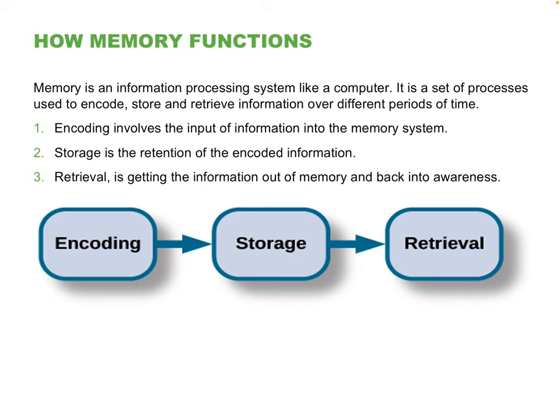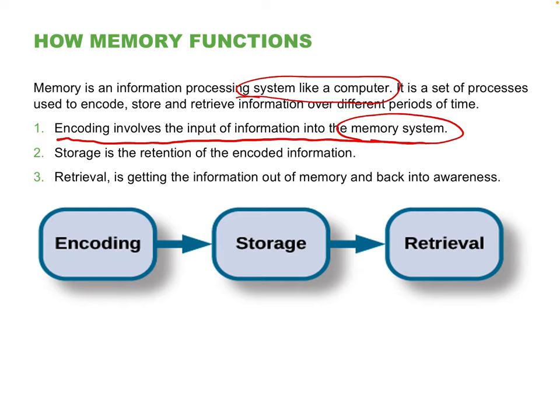In terms of how memory functions, let's talk about some basic terminologies borrowed from computer science. With the advent of the computer, its vocabulary seems like a good analogy to describe how information is moved around and stored within our brain. The first term is encoding — how we put information into memory. If you're using a computer, encoding would be using the keyboard or voice input to transfer information into the system to be stored.